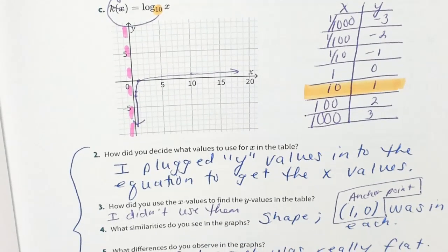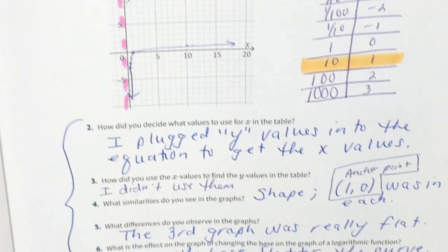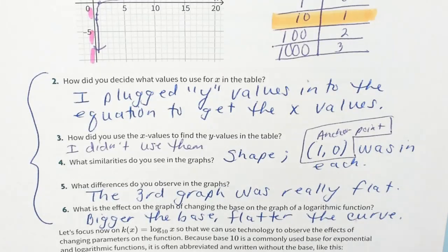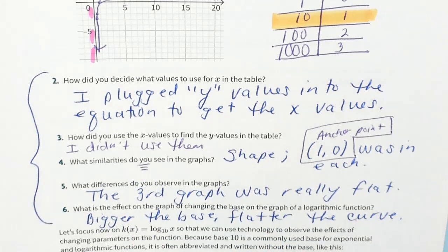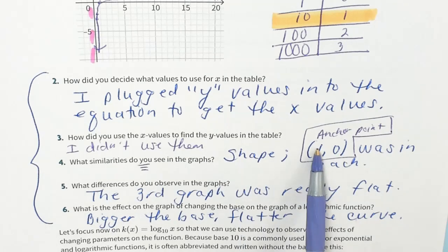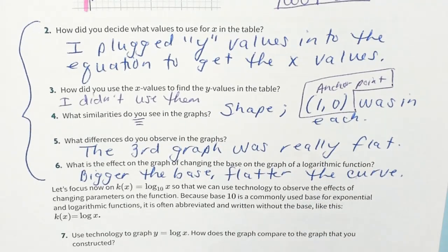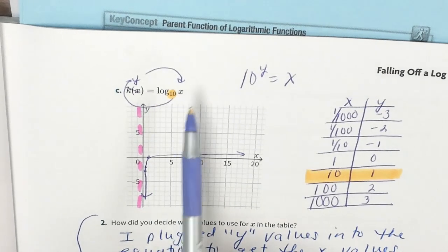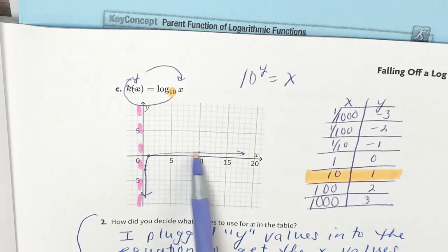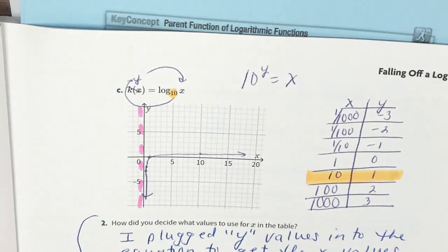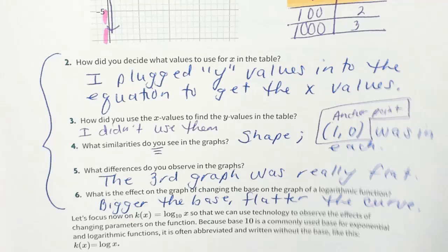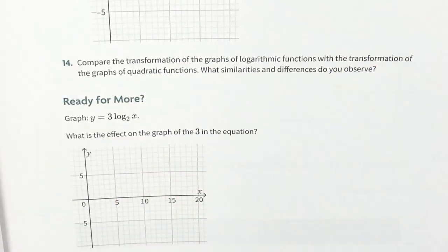We answered these questions — you can have different answers than me because it says 'what similarities do you see?' I noticed the same shape, I noticed they each had an anchor point of (1, 0), and I noticed the third graph was really flat. What I observed is: the bigger the base, the flatter the curve. So we started off the day going over our answers.